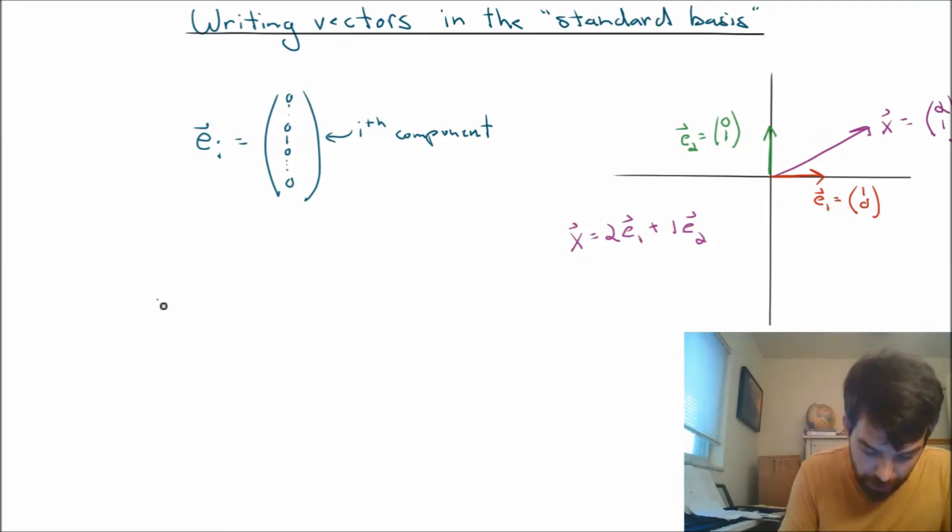So for example, let me take a completely arbitrary x with components x1 all the way down to xn. Now, what I'm trying to do is see whether I can write it as a linear combination of the standard basis vectors. If I look at the standard basis vectors, there's only one that has anything in the first component: e1.